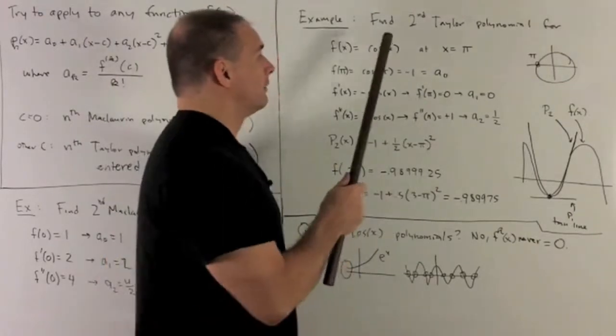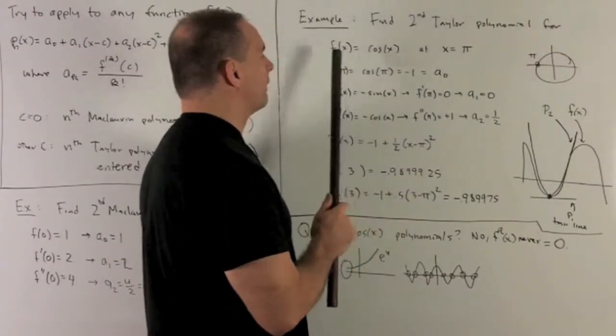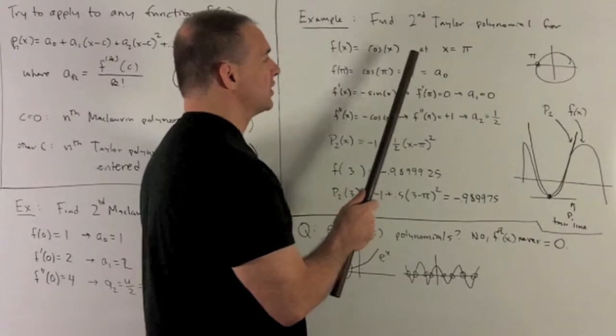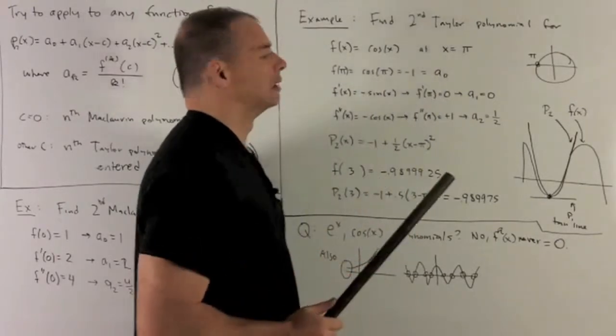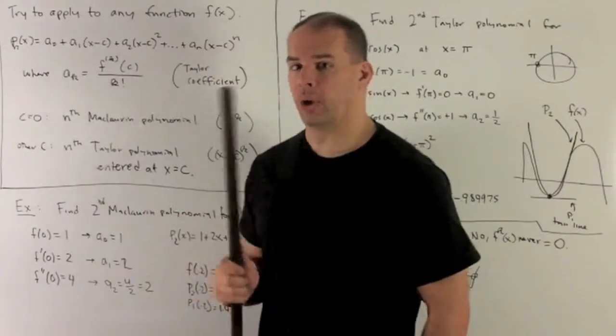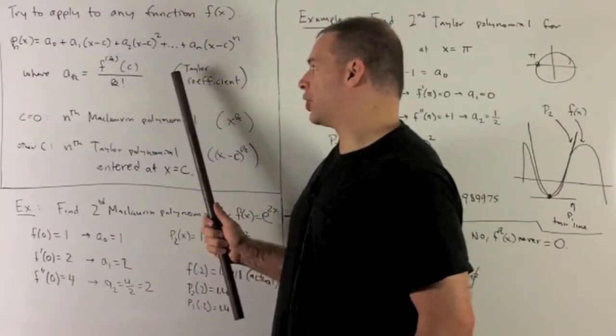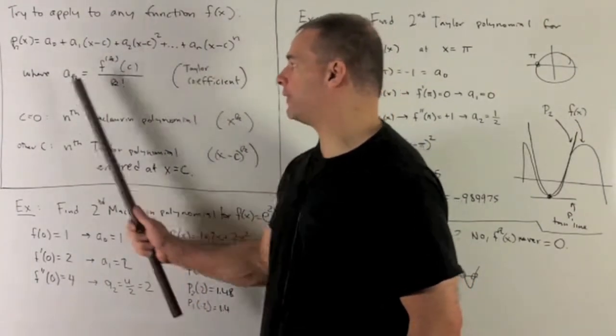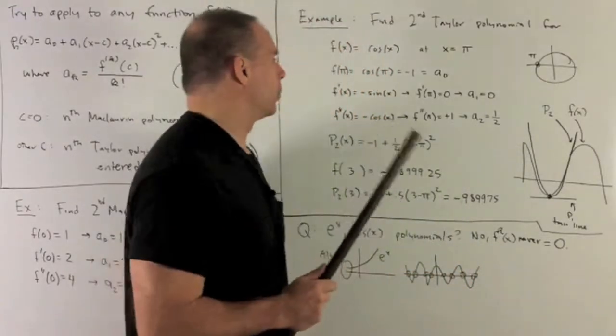Now let's try to find the second Taylor polynomial for f(x) equal to cosine of x, centered at x equal to π. So we just follow our nose, go with our definition. Note, I should have mentioned earlier, this is called the Taylor coefficient.